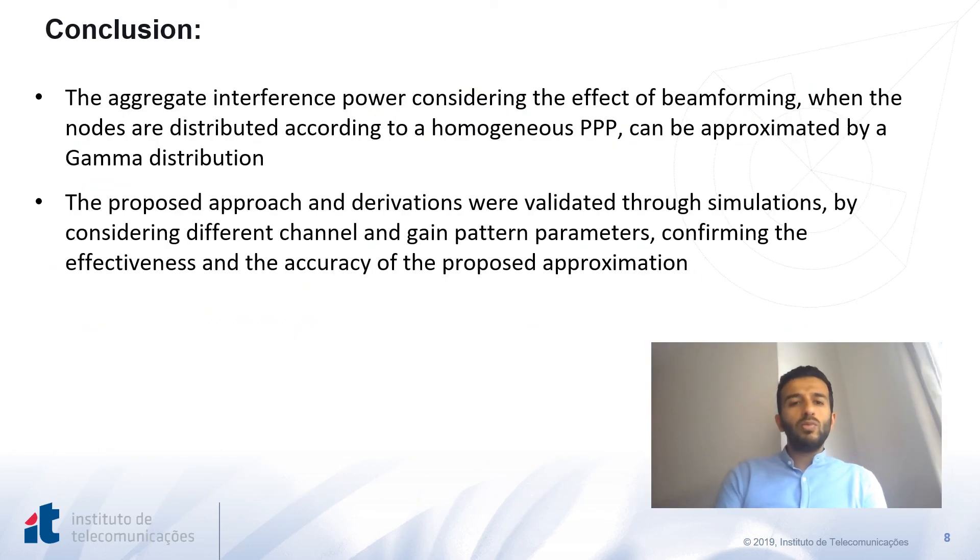In this presentation, we have shown that the aggregate interference power, considering the effect of beamforming, can be approximated by a gamma distribution. The proposed approach and derivations were validated through simulations by considering different channel and gain pattern parameters, which confirms the effectiveness and accuracy of the proposed approximation.